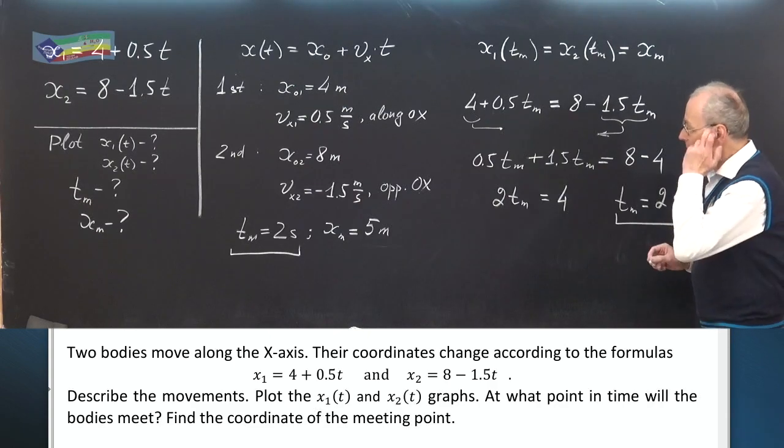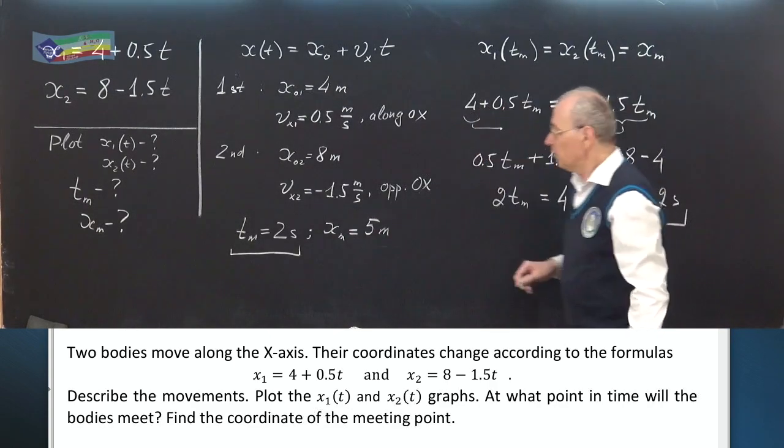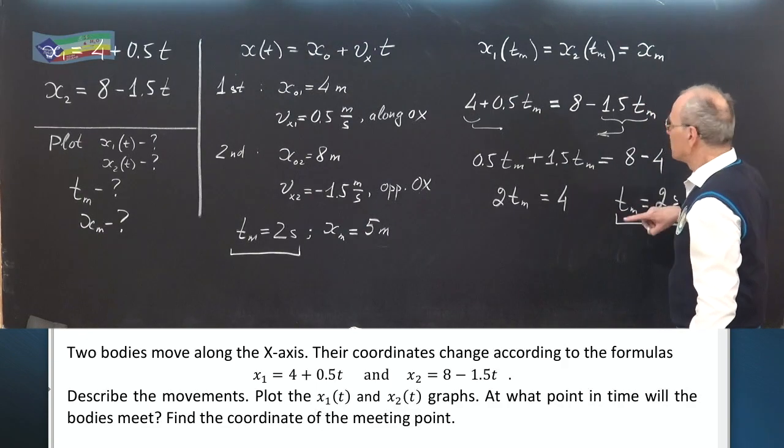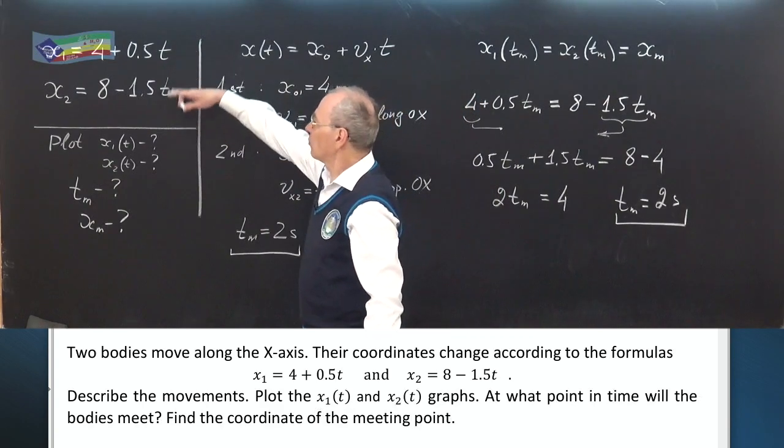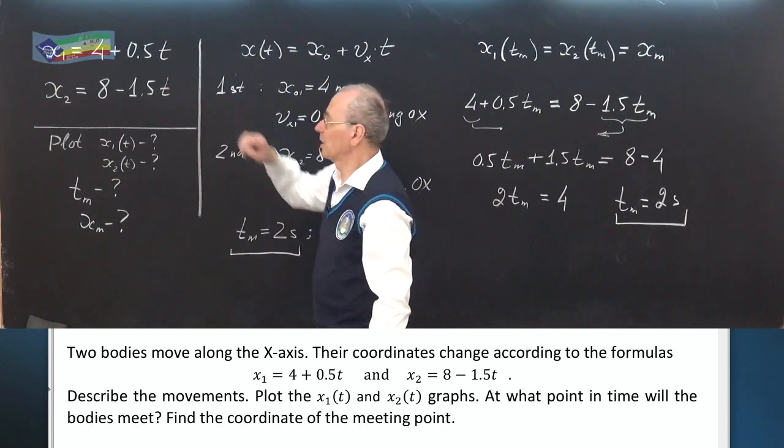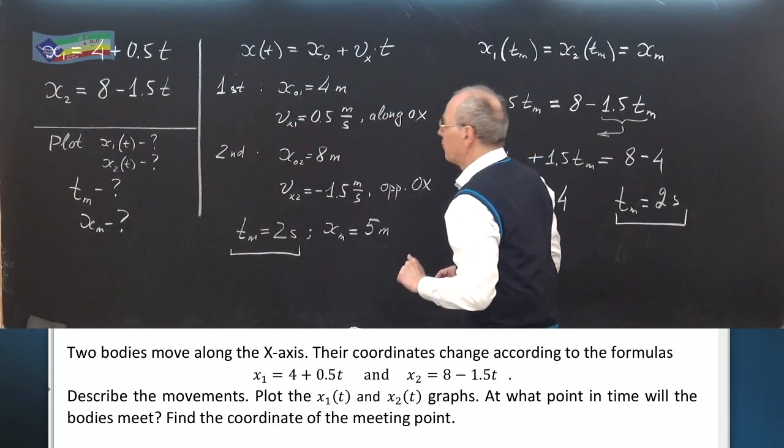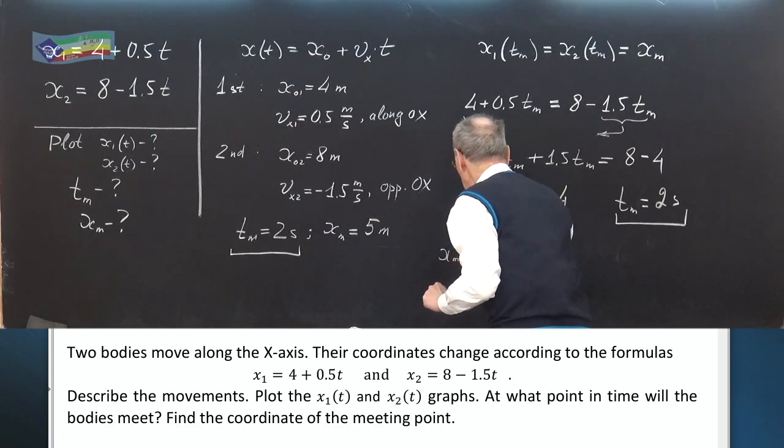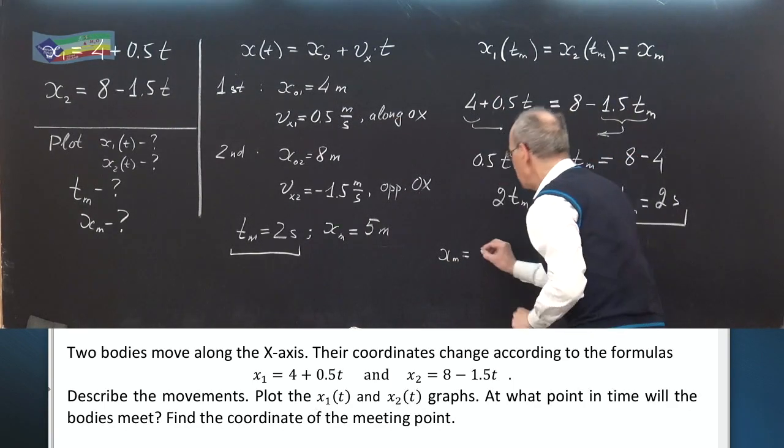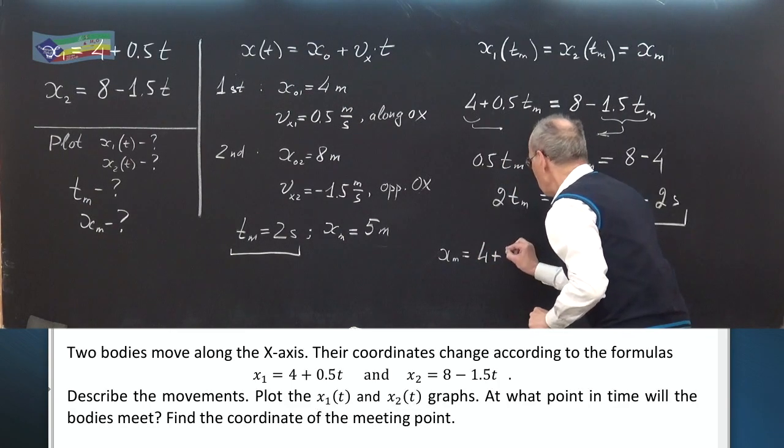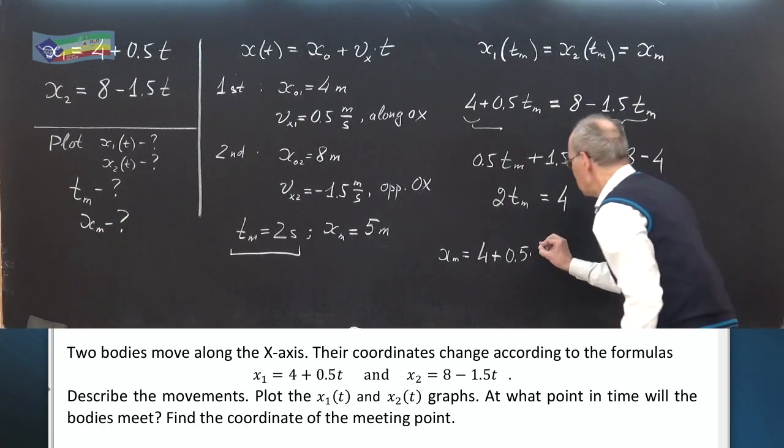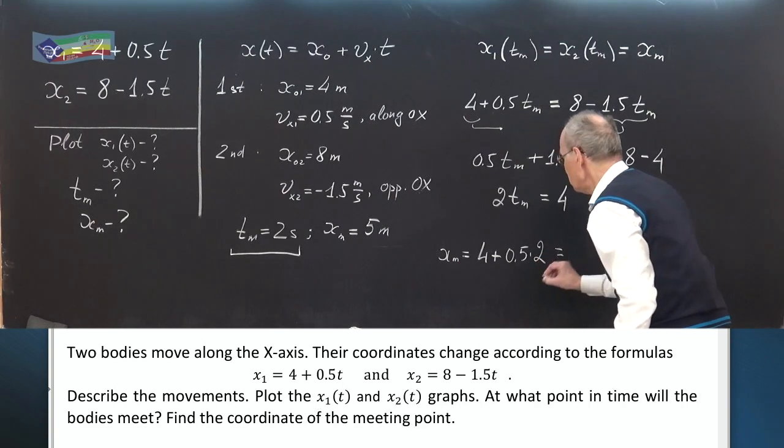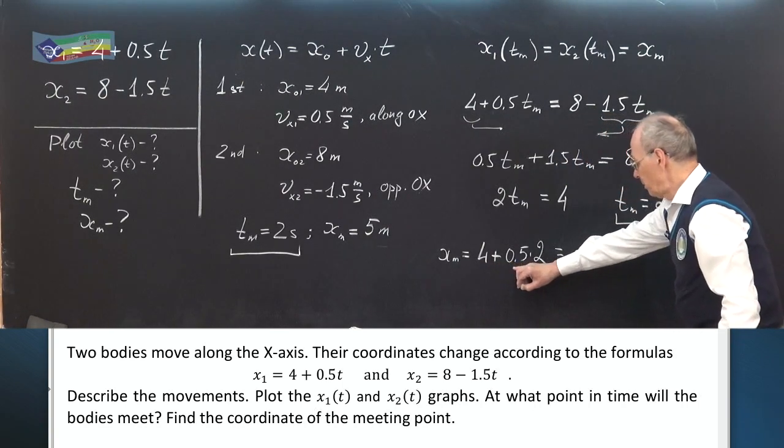Now, we can find the coordinate of meeting point substituting this time in any of these two formulas. For example, to the first, x meeting gives 4 plus 0.5 tₘ gives us 4 plus 1, 5 meters.